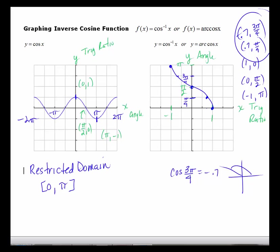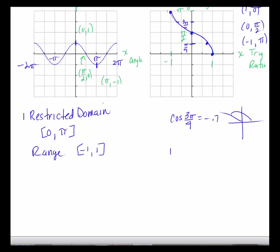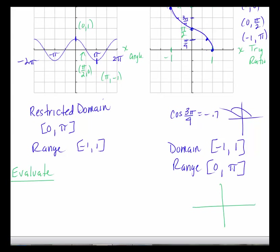You can see the curve — this is the inverse cosine function. On the original, the restricted domain was 0 to pi and the range was negative 1 to 1. So on the new inverse cosine graph, the domain is negative 1 to 1 (the range of the original) and the range is 0 to pi (the domain of the original). Our output values — the angles — must be from 0 to pi.